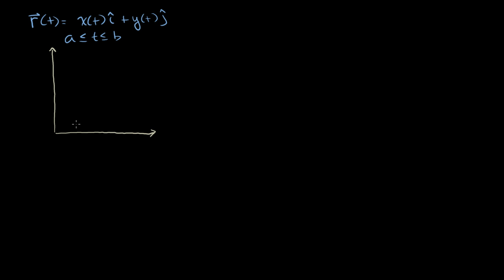When t is equal to a, we're at this vector right here. If you substitute t equal to a, you get a position vector pointing to that point. As t increases, it traces out a curve — the endpoints of our position vectors trace out a curve. When t equals b, we get a position vector pointing to that endpoint. So this defines a path going in this upward direction.